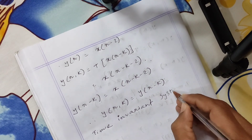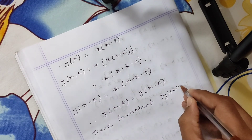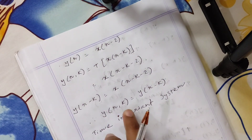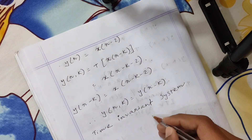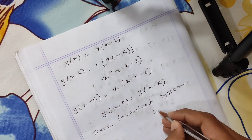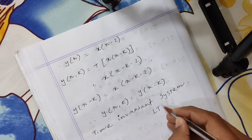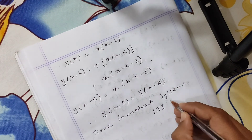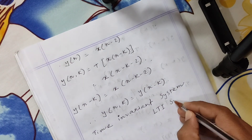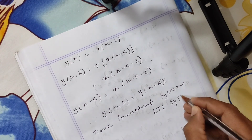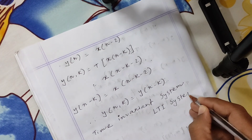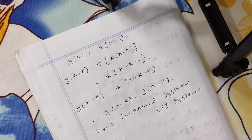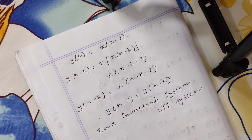We checked this system together: it is a linear system, and we also see it is a time-invariant system. So we can say this is an LTI system — linear time invariant system. Thank you.